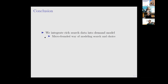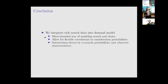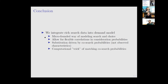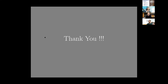The key logic is: we allow for correlation in gamma-tilde terms, which drives co-search observed in the data, and that in turn allows for flexible cross-price elasticities directly informed by the search data. In summary, we integrate search data into a demand model in a micro-founded way, allow for flexible correlation in consideration probabilities so substitution is driven by co-search probabilities, and use a computational trick matching co-search probabilities to loosen computational constraints.